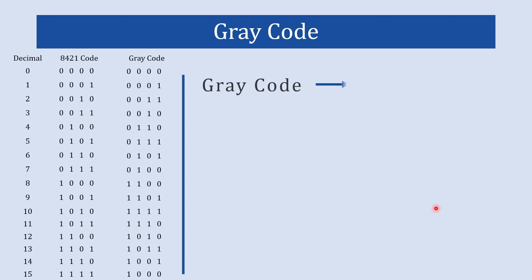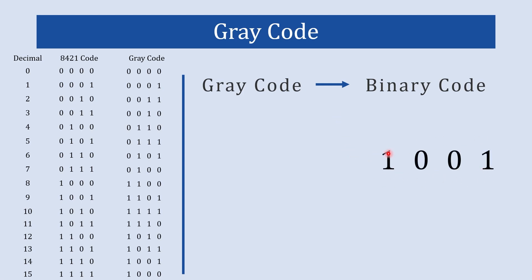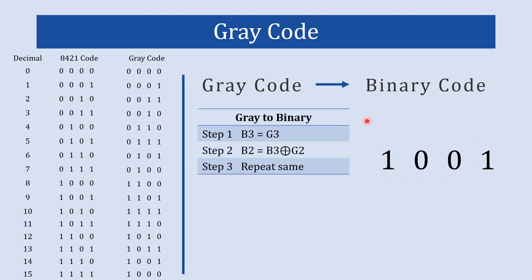In this section we are going to understand how to convert gray code into binary code. We will take gray code 1001 and check the steps to convert it to binary. In step number 1, b3 is equal to g3 — g3 is the MSB of gray code, so the MSB of binary code will be the same as the MSB of gray code. We will write this 1 as it is.